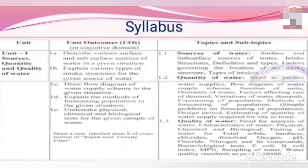For quality of water: need for analysis of water, characteristics of water — physical, chemical, and biological. Testing of water for total solids, hardness, chlorides, dissolved oxygen, pH, fluoride, nitrogen and its compounds. Bacteriological test: E. coli, B. coli index, MPN, sampling of water, and water quality standards as per IS 10500. We have respective unit-wise unit outcomes.